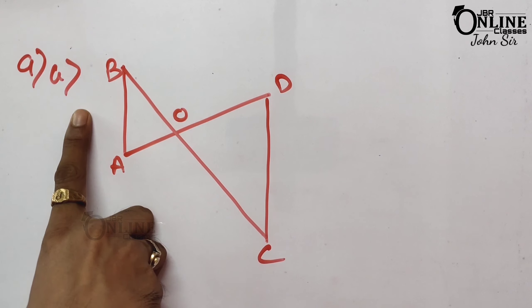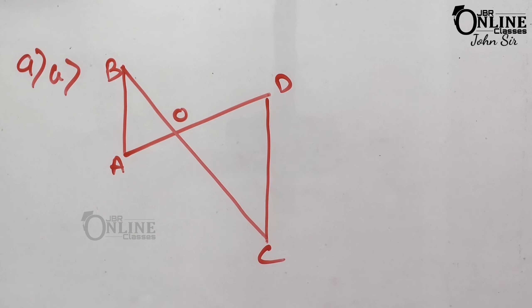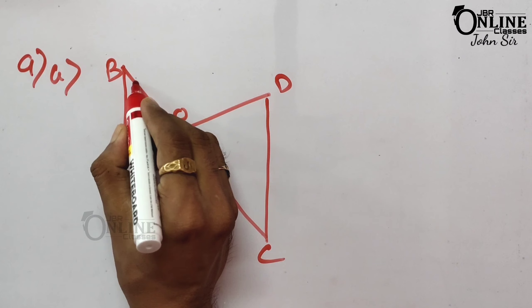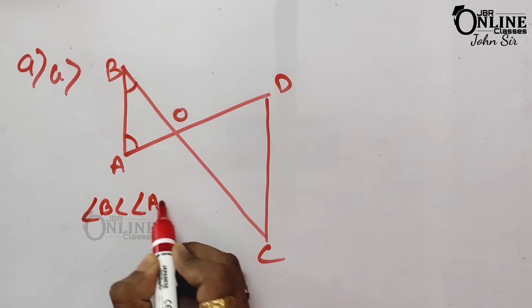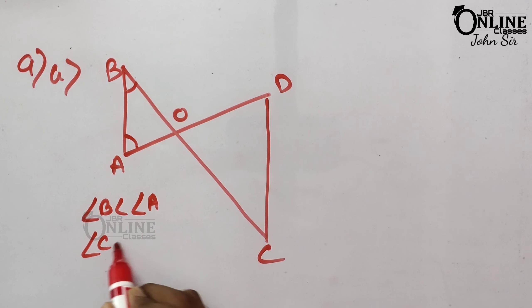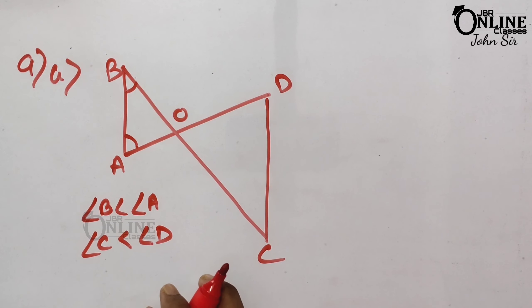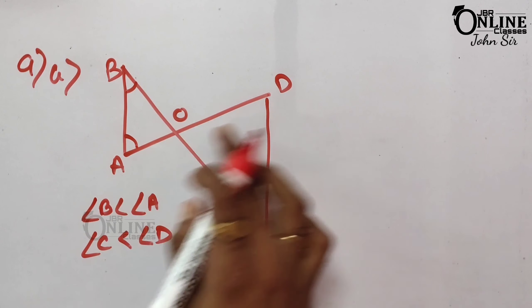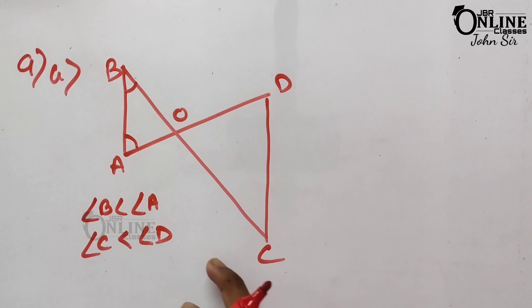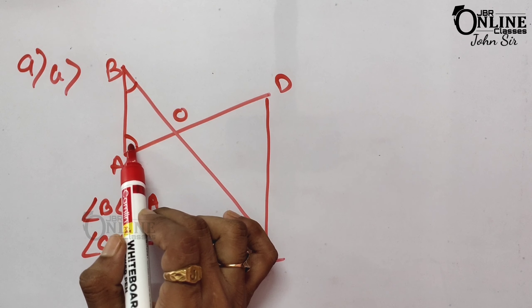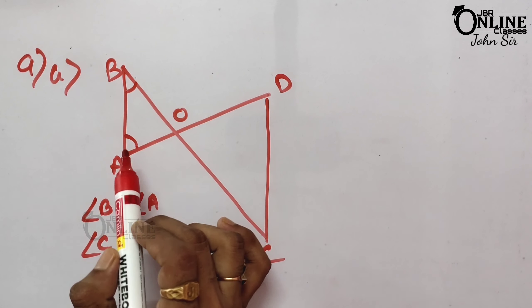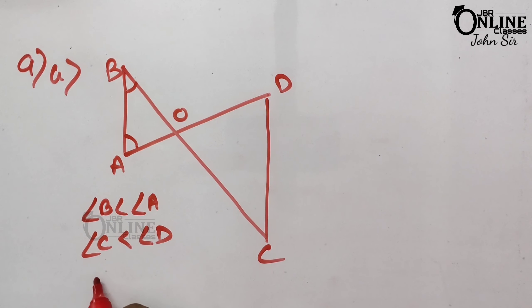Now sum number 9A. In the figure, angle B < angle A, and angle C < angle D. We have to prove that AD < BC. In triangle ABO, since angle B < angle A, it follows that AO < BO.